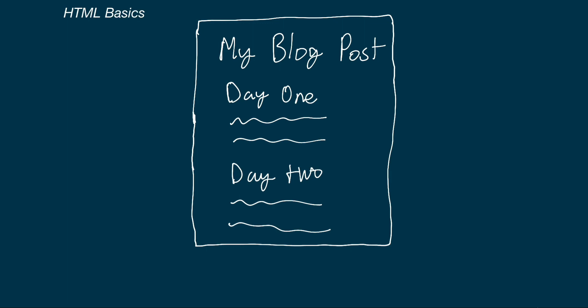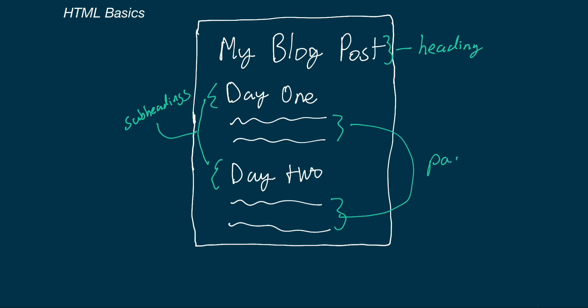At the top we have My Blog Post, which is the primary heading of the page. Then we have the text for day one and day two, which are also headings — but rather than being the primary heading, these are subheadings with less importance. Below each of these subheadings is a paragraph. We could even get more specific and annotate which paragraphs are associated with which headings, but for now let's stick to describing what each piece of text is.